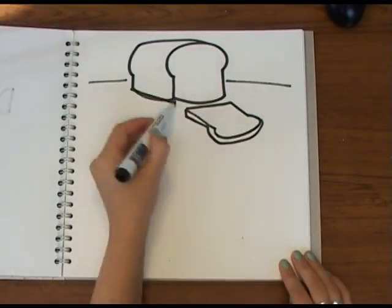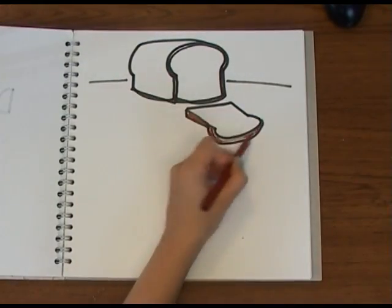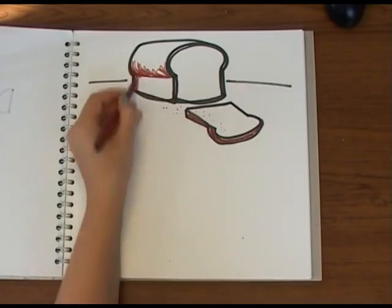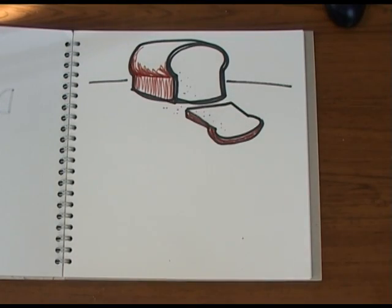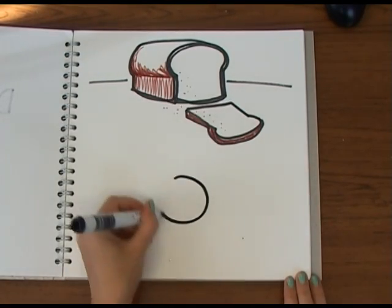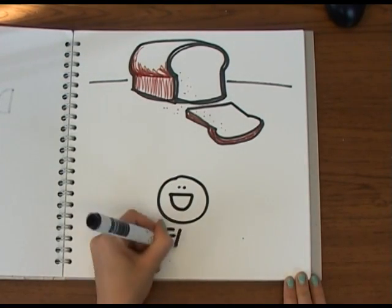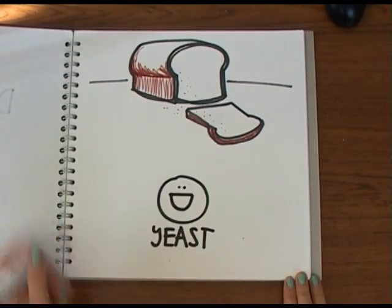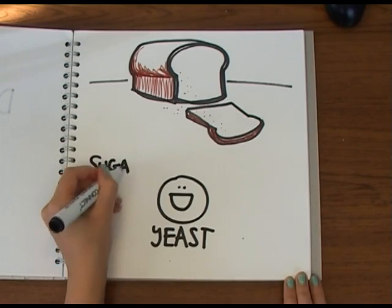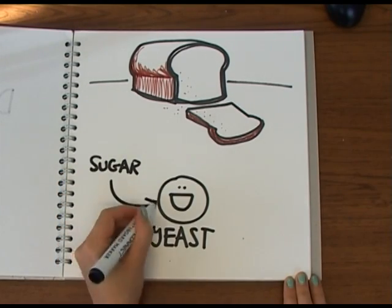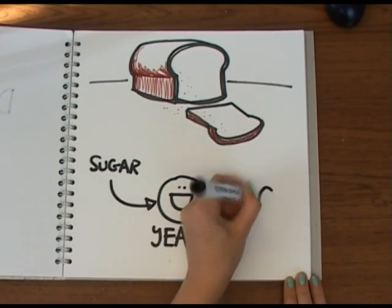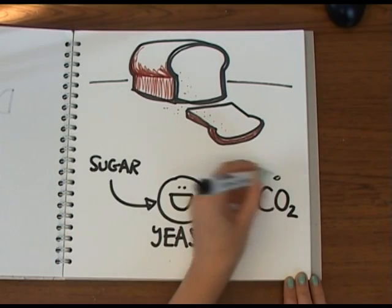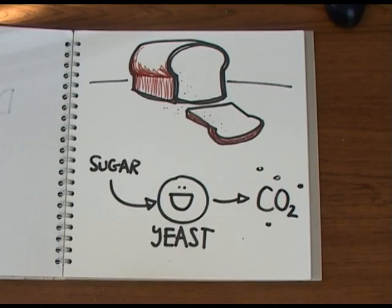The way a cake rises is different to how bread rises. In bread, the yeast that you add to the dough feeds off the sugars in the rest of the dough and breathes out carbon dioxide that forms bubbles in the dough and puffs it up. But there's no yeast in normal cake mixture, so how does it work?